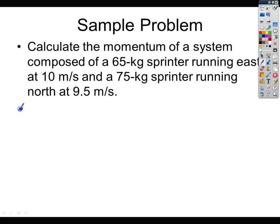So if we would look at the two, we have one sprinter going this way at 10 meters per second, and we have another sprinter going in this direction at 9.5 meters per second. We need to find out what the momentum of the two actually is together.